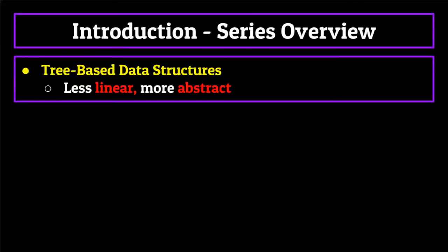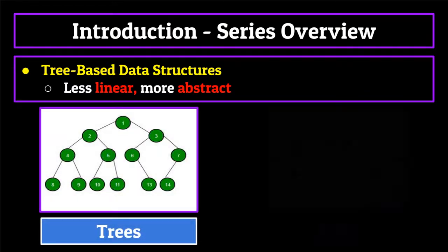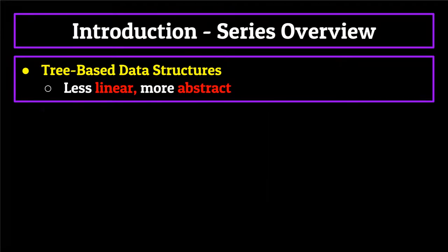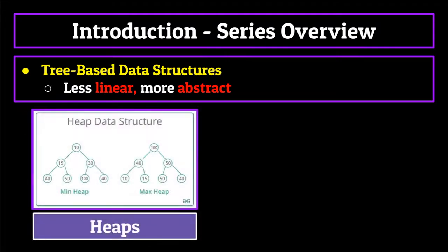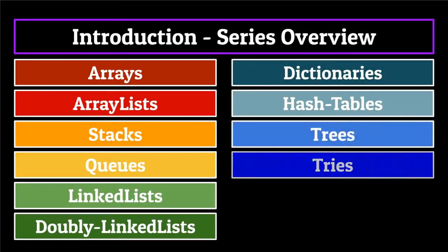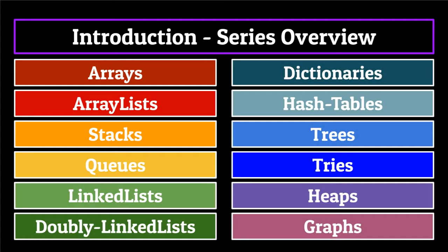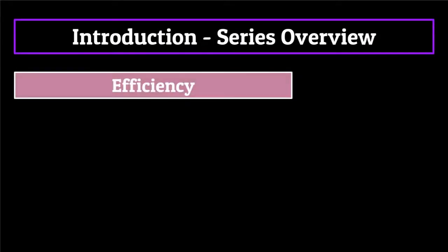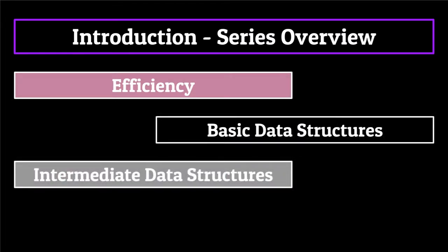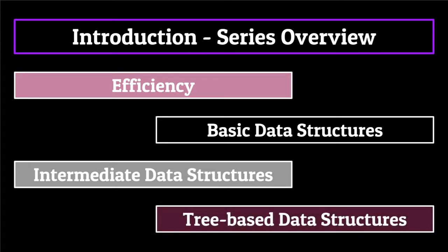Then we'll wrap up the series talking about trees and tree-based data structures — less linear and more abstract — beginning with the tree itself. We'll then move on to tries, a very useful data structure used for a lot of word processing algorithms. And finally, end off the series with a discussion on heaps and graphs. In total, I'll be taking you through four different segments containing 12 of the most common data structures that are practically used, covering section one on efficiency, section two on basic data structures, section three on intermediate data structures, and section four on tree-based data structures.